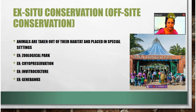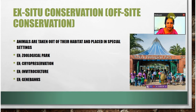Let us continue with conservation of biodiversity. We have seen the first method, in situ conservation, and the second one is ex situ conservation or off-site conservation. In ex situ conservation, organisms are protected in special settings — they are taken out of their natural habitats and kept in special settings to protect them.